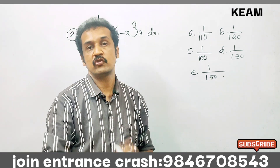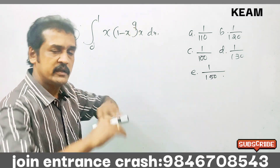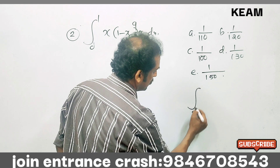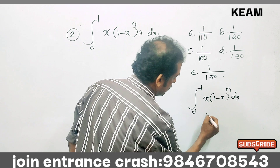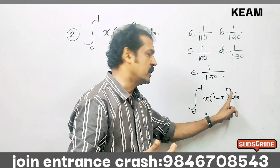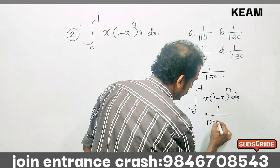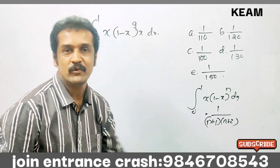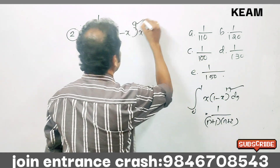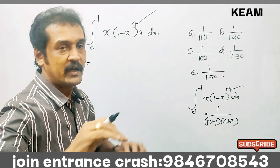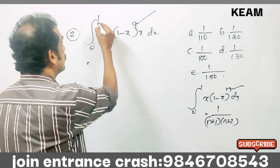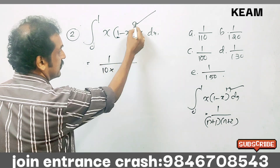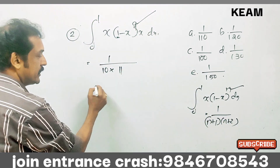Next question: integral from 0 to 1 of x times (1 minus x) whole raised to 9. The answer can be written using the formula 1 divided by (n+1) into (n+2). Here n equals 9, so n+1 is 10 and n+2 is 11. The answer is 1 divided by (10 times 11), which is 1 by 110.